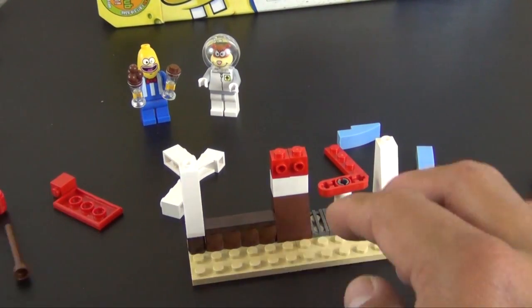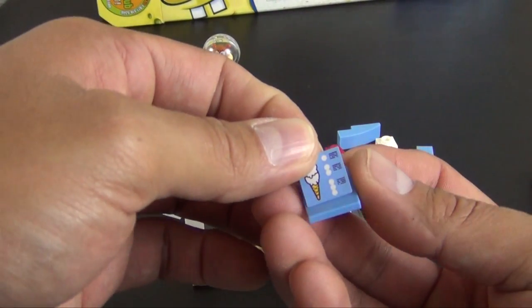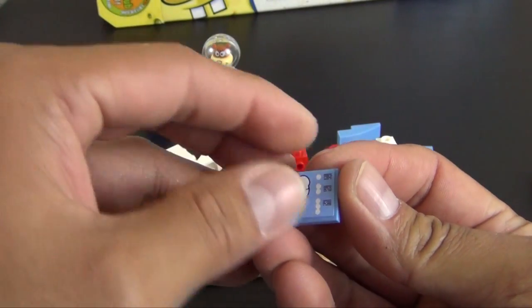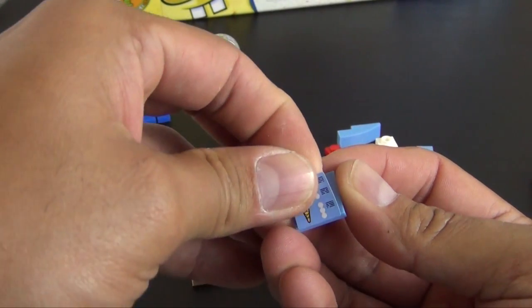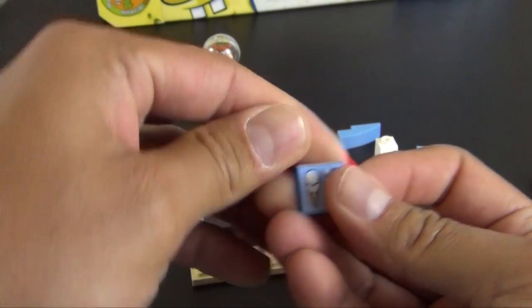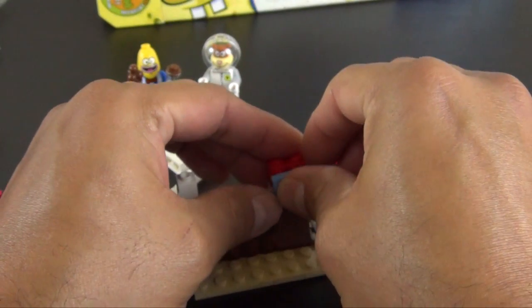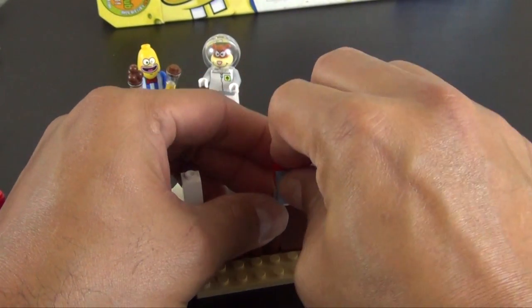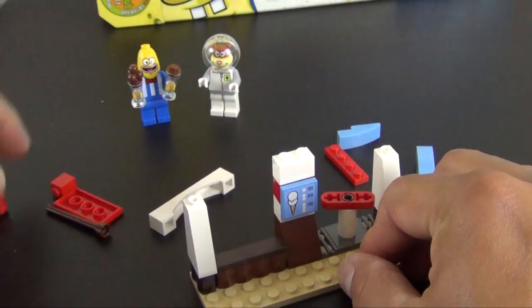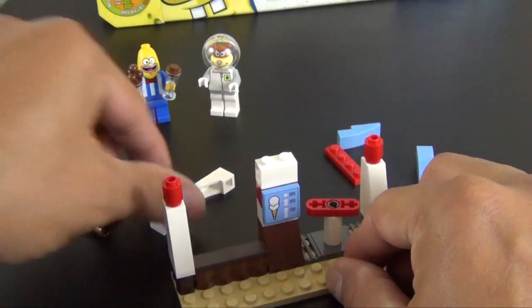All right, so we have our first sticker, looks like a menu with pricing maybe for these ice cream cone scoops. It goes there.